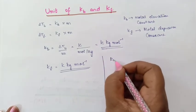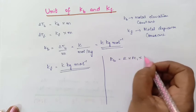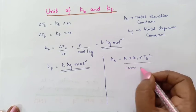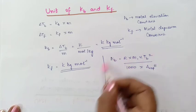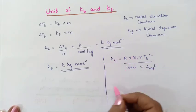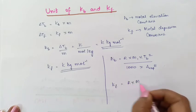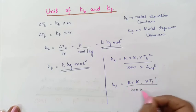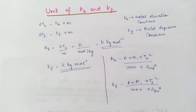So for Kb, the formula is R into M1 into Tb square divided by 1000 into delta vaporization H. And to calculate Kf we have R into M1 into Tf square divided by 1000 into delta fusion H. So these are the two formulas to calculate Kb and Kf.